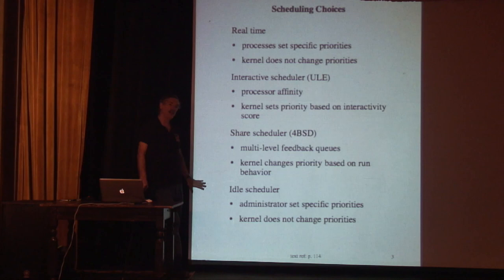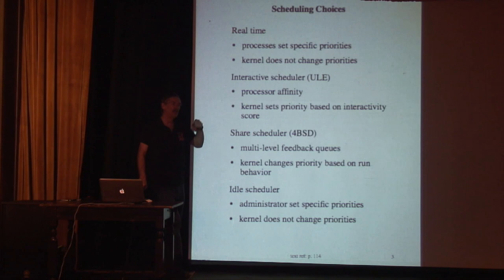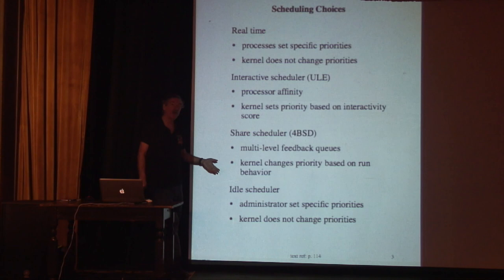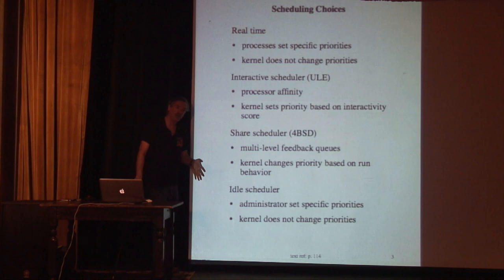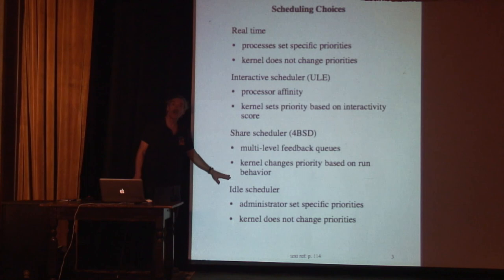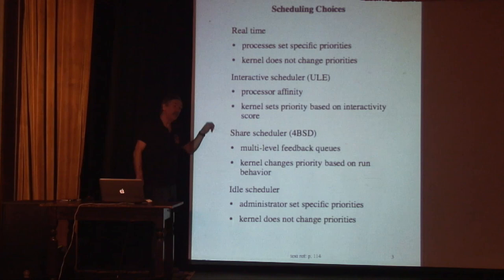Before diving into details, I want to talk about how scheduling is divided into two parts: the low-level scheduler and the high-level scheduler. The low-level scheduler runs when we do a context switch. On a modern busy processor, context switching occurs tens or even hundreds of thousands of times per second, so we need a very short time to figure out what to run next. The low-level scheduler is just a set of priority queues — it finds the highest-priority thing to run and runs it. Find a non-empty queue, pick the first thing off the list, run it.